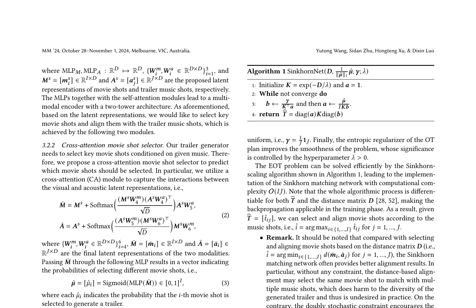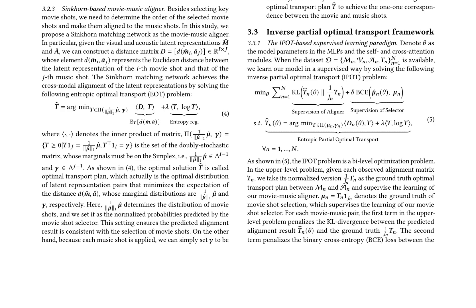The inverse partial optimal transport framework is trained in a supervised way by solving a bi-level optimization problem. The upper-level problem minimizes the KL divergence between the predicted alignment result and the ground truth optimal transport plan, as well as the binary cross-entropy loss between the predicted movie shot selection and the ground truth. The lower-level problem solves the entropic optimal transport problem to obtain the optimal transport plan. The authors claim their framework can generate natural and diverse trailers by selecting and aligning movie shots conditioned on the music shots.